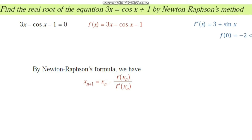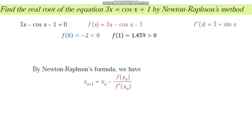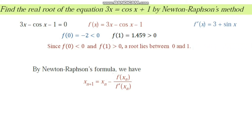We identify the endpoints of the interval using the intermediate value theorem. We compute f(0) = -2 and f(1) ≈ 1.459. Since the product f(0)·f(1) is negative, a root lies between 0 and 1. We choose the initial approximation x₀ = 0.5, the midpoint of 0 and 1.